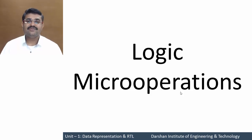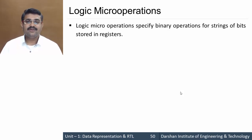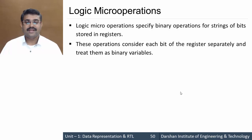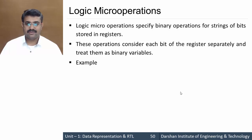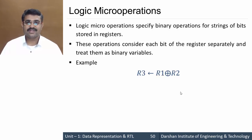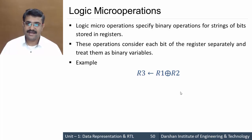In this session we'll discuss logic micro operations. Logic micro operations specify the binary operations which are to be carried out onto the contents of the register. In this operation each bit of the register is considered separately. For example, if we want to perform XOR operation — R1 XOR R2 — and the result is to be stored in R3.